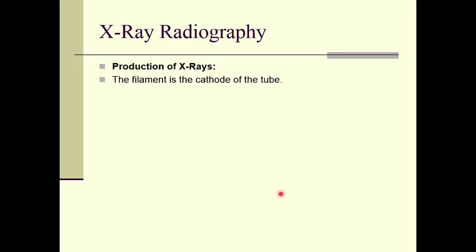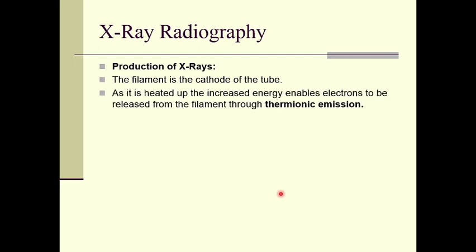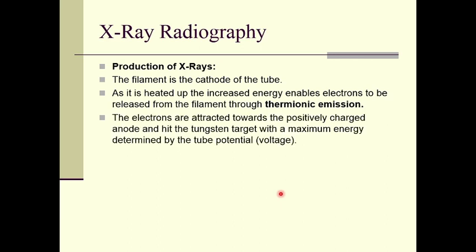Let us study the production of X-rays. X-rays are produced inside the Coolidge tubes. The filament is the cathode of the tube. As it is heated up, the increased energy enables electrons to be released from the filament through thermionic emission. The electrons are attracted towards the positively charged anode and hit the tungsten target with maximum energy determined by the tube potential or voltage.